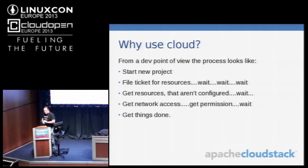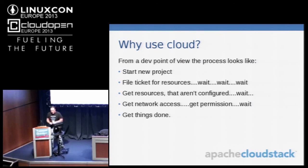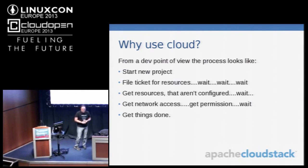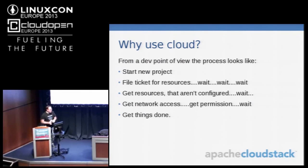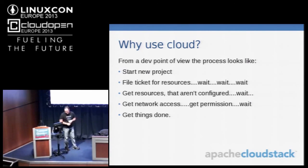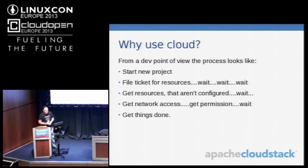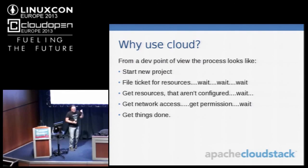You've got to get the PO approved — who knows how long that takes in your org. Then place the order, and the vendor has to fulfill it. Typically I see that ranging from four to six weeks, sometimes more. Then the servers come in, everyone's happy, except they sit in the hallway or server room waiting to be racked and cabled — that's a different department, so another ticket. Then they get cabled up, and you need network access: IP addresses, routing if it's its own network, firewall rules — that's two or three different departments depending on your size. More tickets, more waiting.